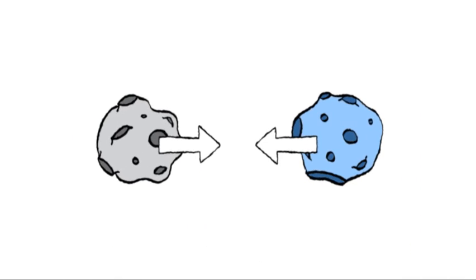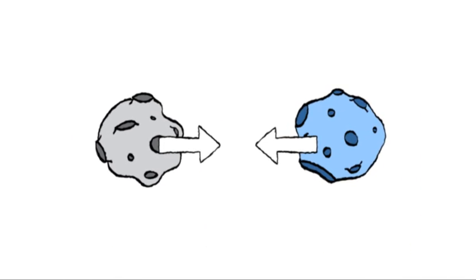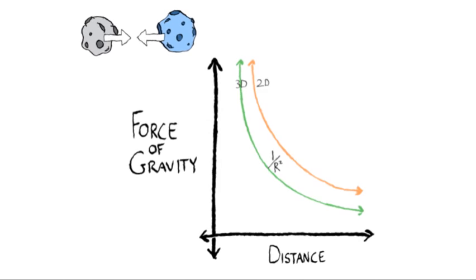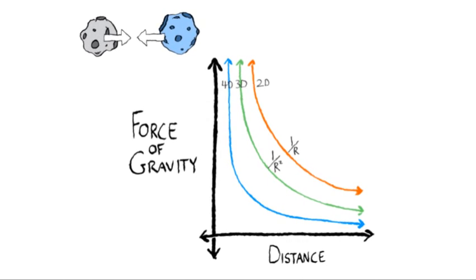And things like gravity behave differently in different kinds of space, too. Like in three dimensions, the strength of gravity between two massive objects depends on the distance between them, squared. In two dimensions, it just depends on the distance. But in four dimensions, gravity depends on the distance cubed.